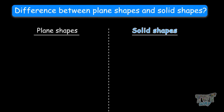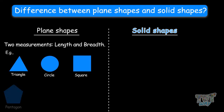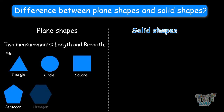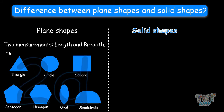First of all, what is the difference between plane shapes and solid shapes? Plane shapes have two measurements: length and breadth — as in triangle, circle, and square. They all have a length and a breadth. They are called 2D shapes.